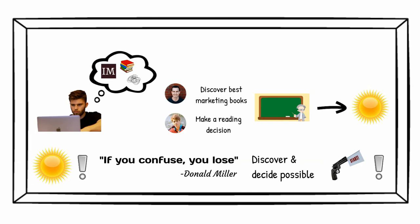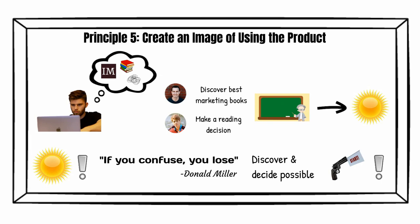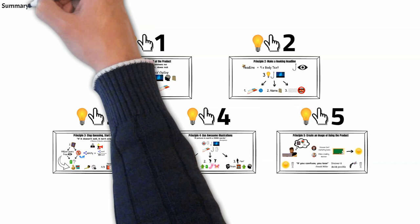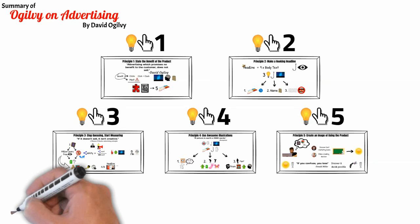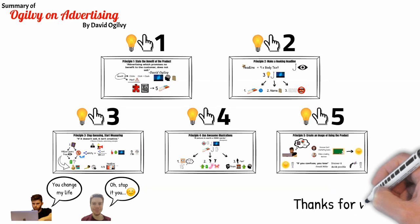Principle 5: Create an image of using the product. This was my interpretation of 5 of the principles from the book Ogilvy on Advertising. I'd love to hear if you were able to apply these principles in the comments. Thank you for watching ImproveMatters and as David Goggins says, stay hard!